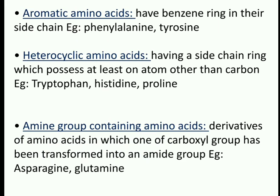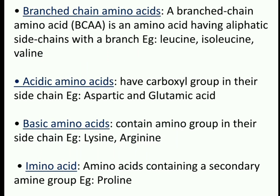Amide group-containing amino acids are derivatives in which one of the carboxyl groups has been transformed into an amide group — examples are asparagine and glutamine. Branched-chain amino acids (BCAA) are amino acids having an aliphatic side chain with a branch — examples are leucine, isoleucine, and valine.